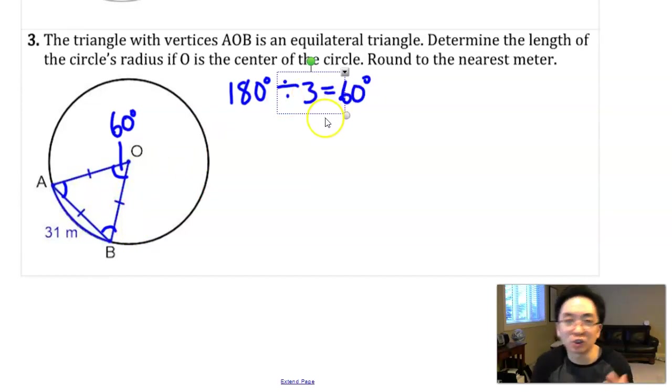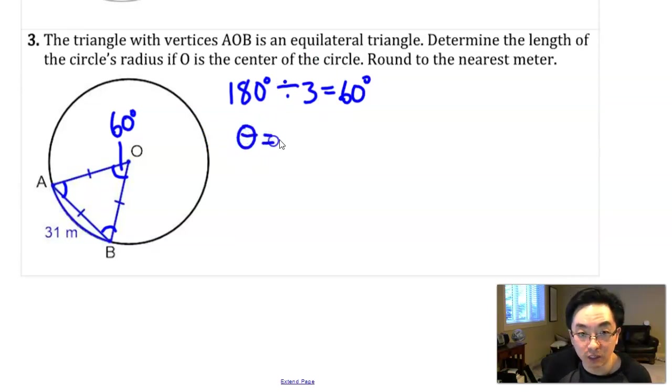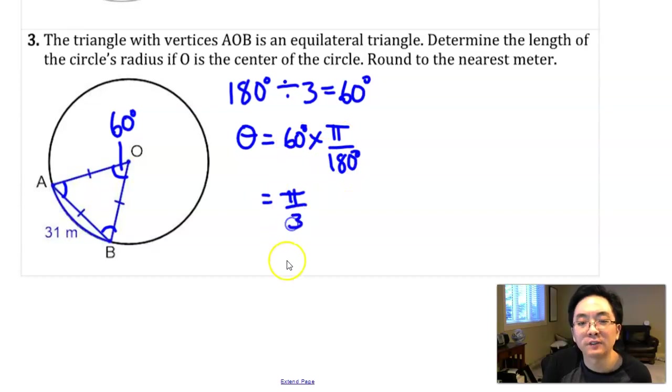I'm thinking of it in terms of degrees, so I need to convert this into radians first before I use the formula. Theta is actually going to be equal to 60 degrees times pi over 180. The interesting thing is I could get the decimal version, but 60 over 180 is a third, so really what I have here is pi over 3. That's my theta in radians.